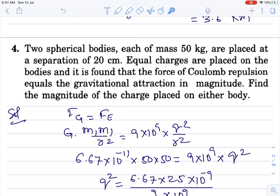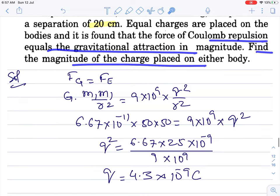Next question. Two spherical bodies each of mass this much placed at this separation. Equal charges are placed on the bodies and it is found that the force of coulomb repulsion equals the gravitational attraction in magnitude. Find the magnitude of charge placed on either body. So gravitational force equals coulomb force. Gravitational force formula this, coulomb force this. Value put karte hain, constants, mass 50-50, distance cancel ho jayega, charge aa jayega.